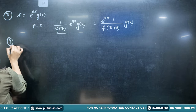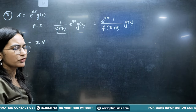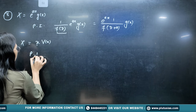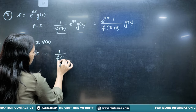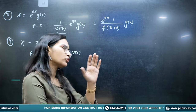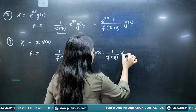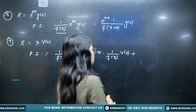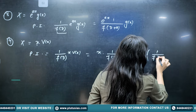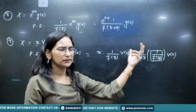Fourth case: X may be of the type x times V(x) — a simple x multiplied by some function. PI is 1/f(D) into x·V(x). You can take x outside as it is, but there will be a second term: first term is x times 1/f(D) of V(x), and the second term is the complete derivative with respect to D of 1/f(D), multiplied by V(x). Then proceed and that gives your particular solution.